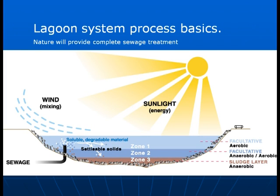Lagoon systems work very much the same as mechanical systems, and nature will provide complete sewage treatment. What you're doing is relying on Mother Nature and the elements to do the same sort of things. You put the sewage into a pond and sunlight energy and wind provide the mixing and air required for biodegradation that occurs normally in a mechanical system. You've got different zones within the lagoon — aerobic activity, anaerobic activity in the facultative zone, and a sludge layer at the bottom. Sunlight also provides ultraviolet radiation that acts as a disinfectant to pathogen organisms.